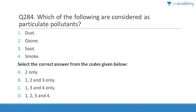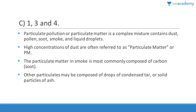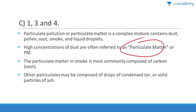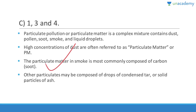Question 284: Particulate pollutants include dust, soot, and smoke — but not ozone. Answer is C (1,3,4). Particulate matter is a complex mixture containing dust, pollen, soot, smoke, and liquid droplets. Particulate matter in smoke is commonly composed of carbon or soot; it may also include condensed tar or ash.